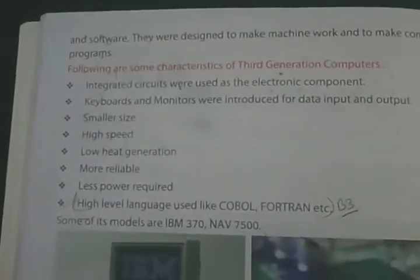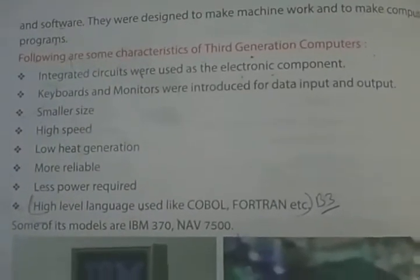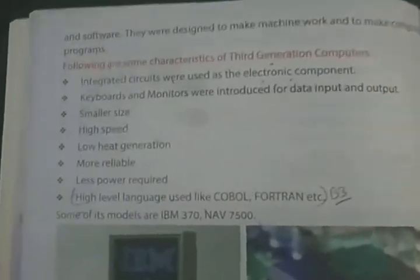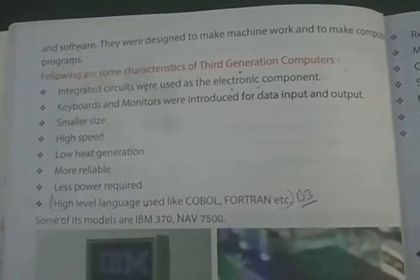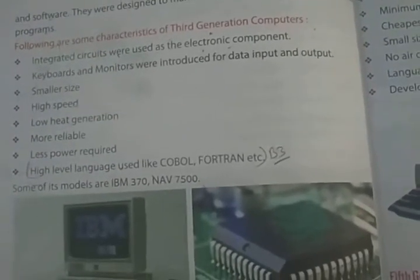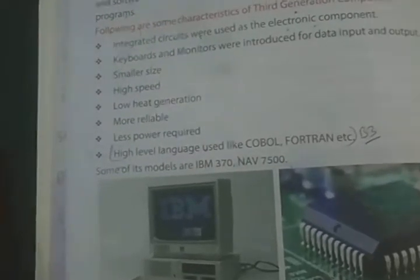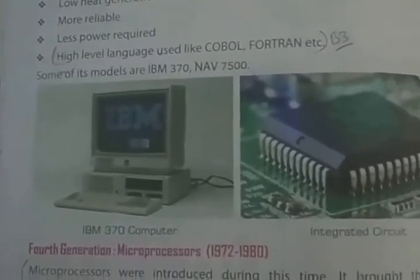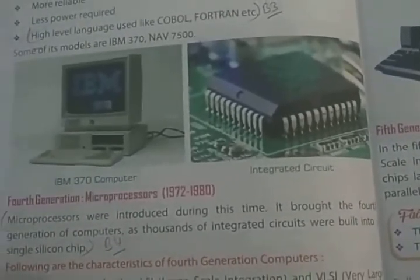Characteristics of third generation computers: integrated circuits were used as electronic components. Keyboards and monitors were introduced for data input and output. High-level languages such as COBOL and FORTRAN were now used. Models include IBM 370 and NAV 7500.